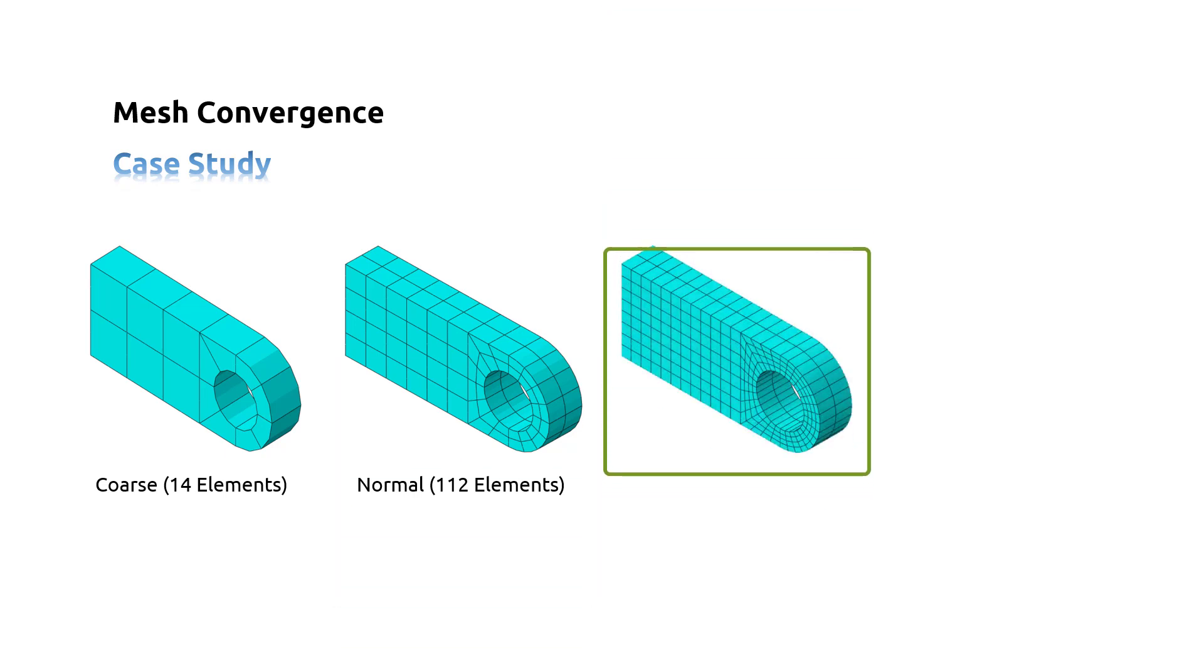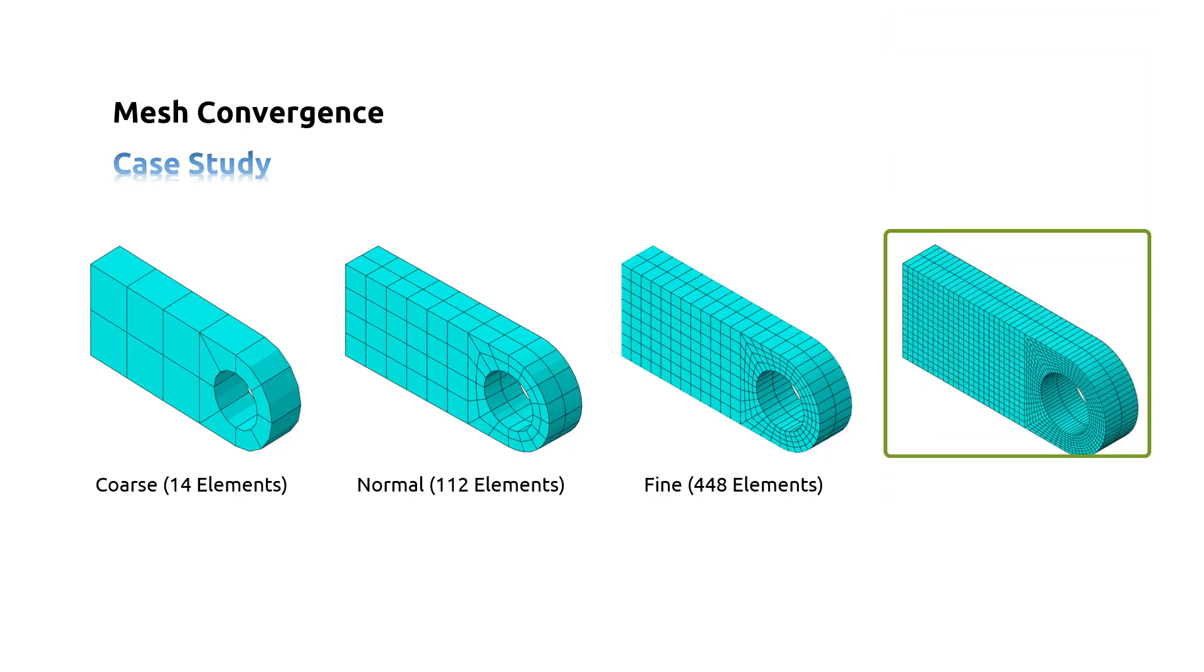The third mesh density, which is named fine, consists of 448 elements. And the fourth mesh density, which is named very fine, consists of 1792 elements. All the mesh densities have the same element types, which is declared by C3D20R elements.